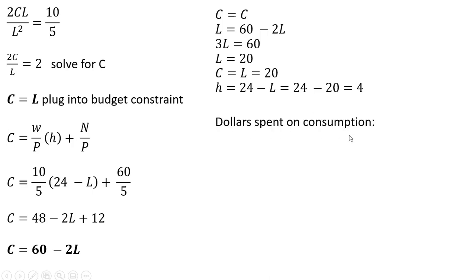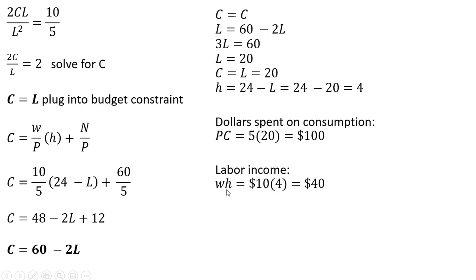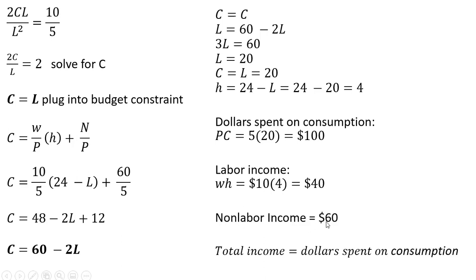The total dollars spent on consumption is the price of consumption times the number of consumption purchases, which is $100. The person's labor income is the wage times hours of work, so the person makes $40 in the labor market, and also has non-labor income of $60. So total income equals the total dollars spent on consumption. I hope you found this video helpful.